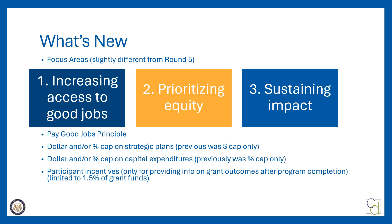Round 6 FOA has three key focus areas which are similar to but slightly different from Round 5's core principles. The TA videos on application components and project results talk more about the focus areas. You are required to connect your project description to each of these focus areas as well as your project results. Portions of the statement of need also relate to your ability to connect to good jobs principles — that's focus area one — and identification of historically marginalized individuals or communities to be prioritized, which is focus area two.